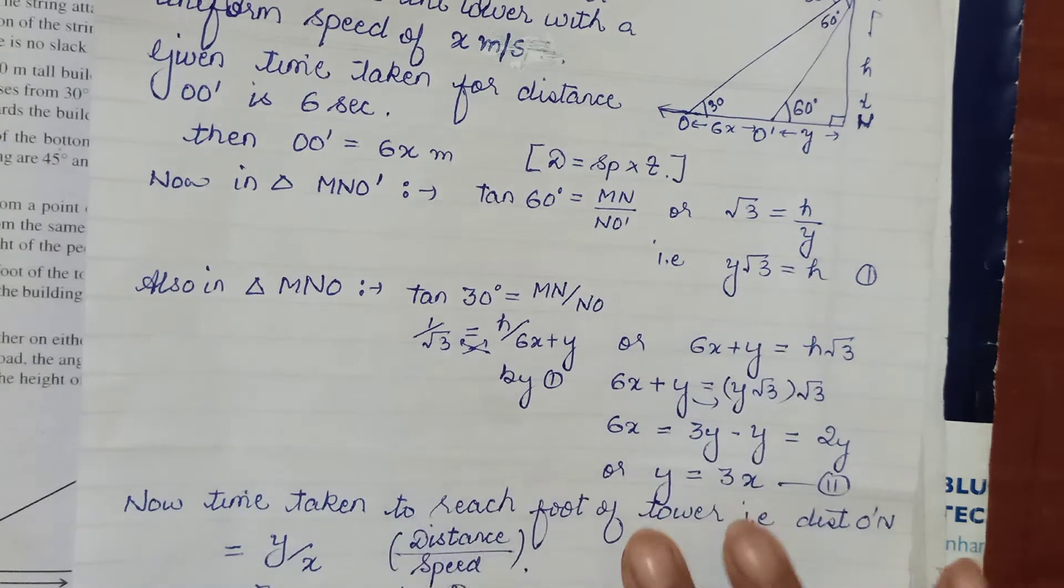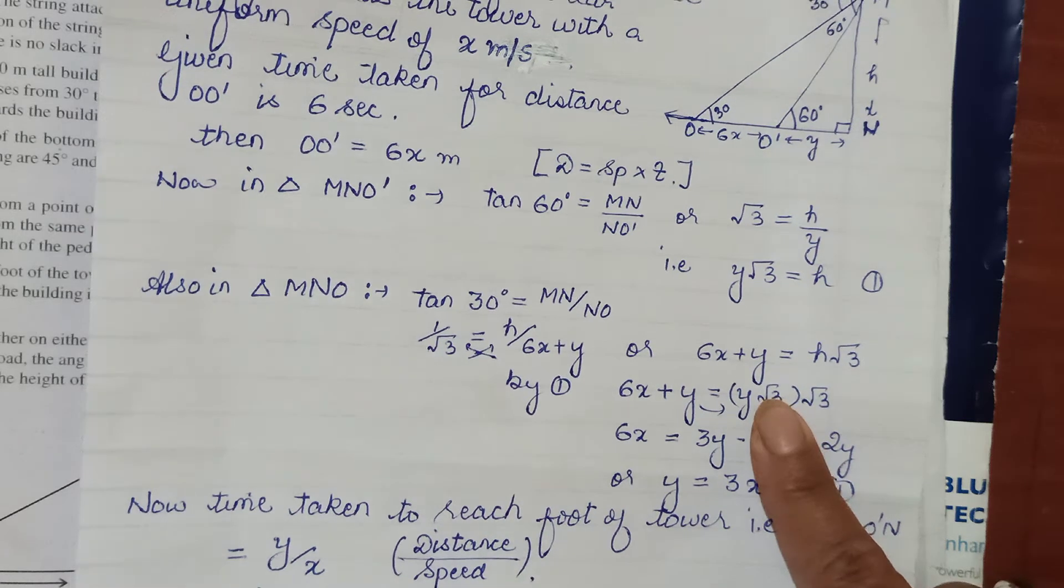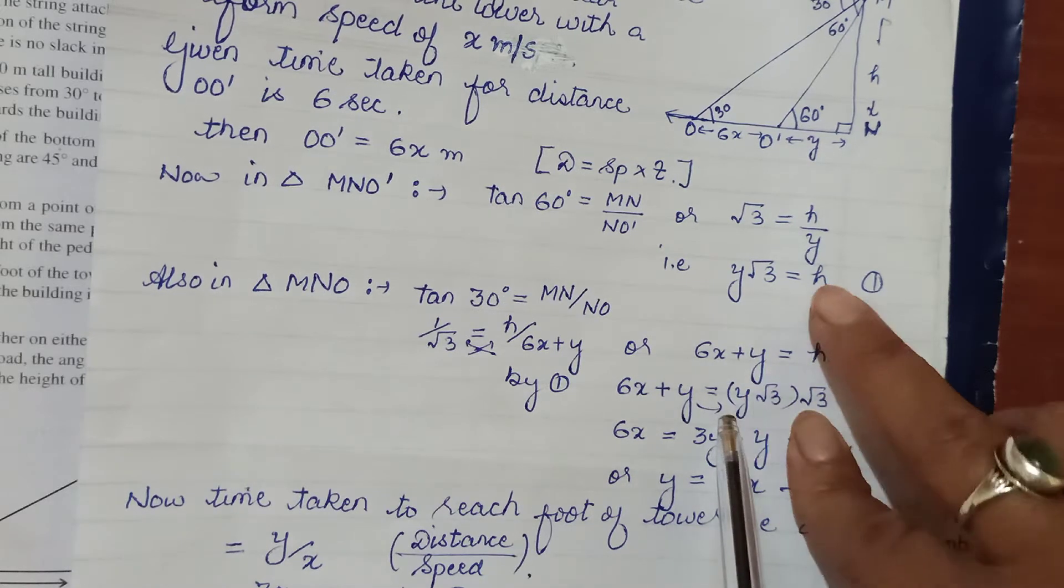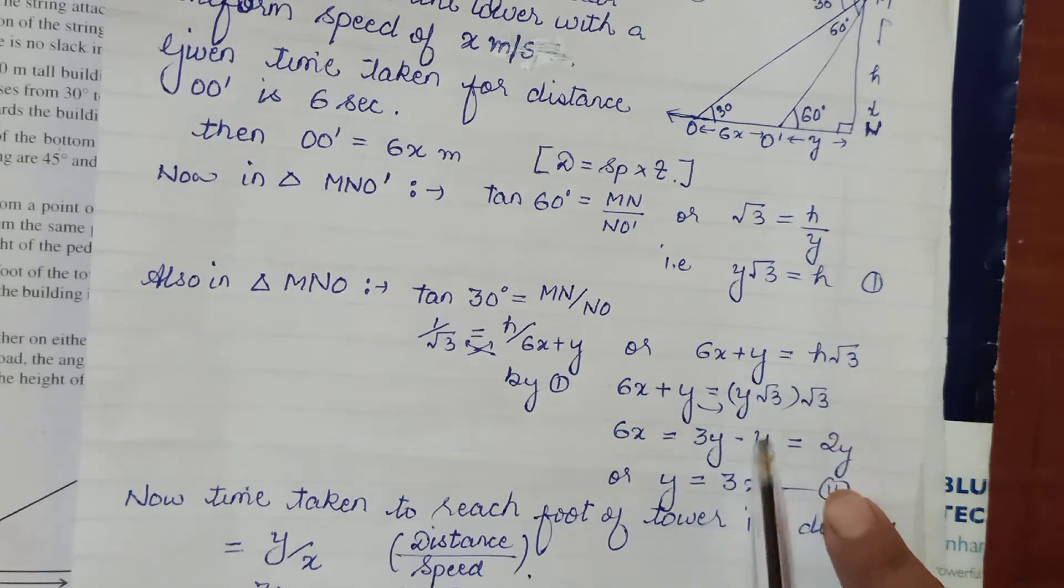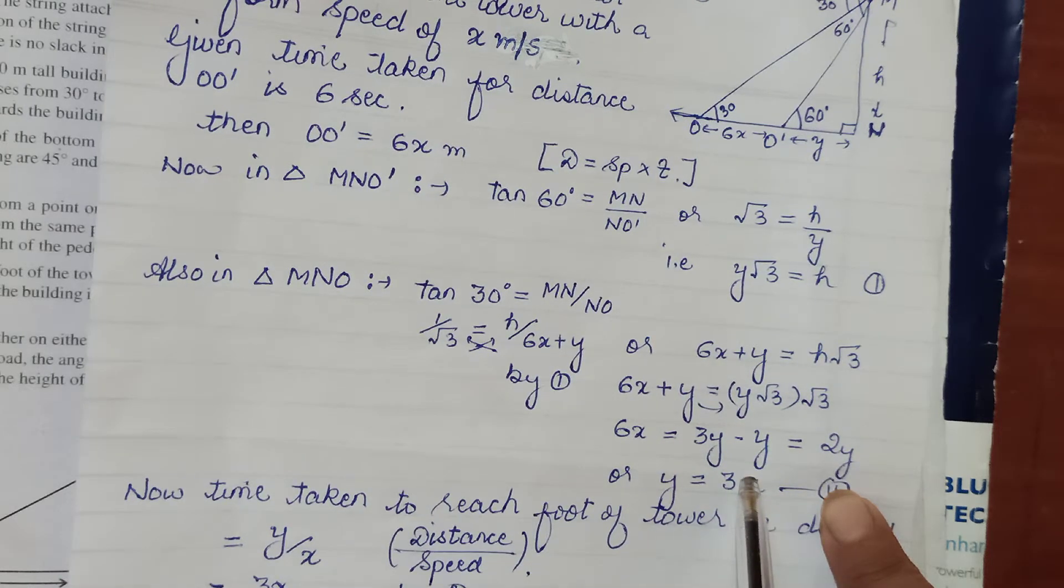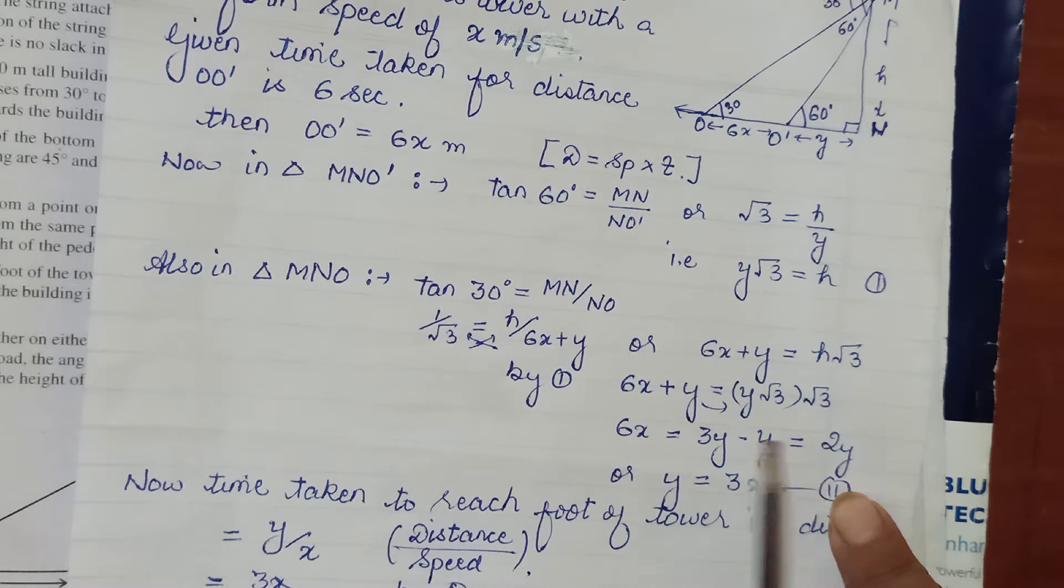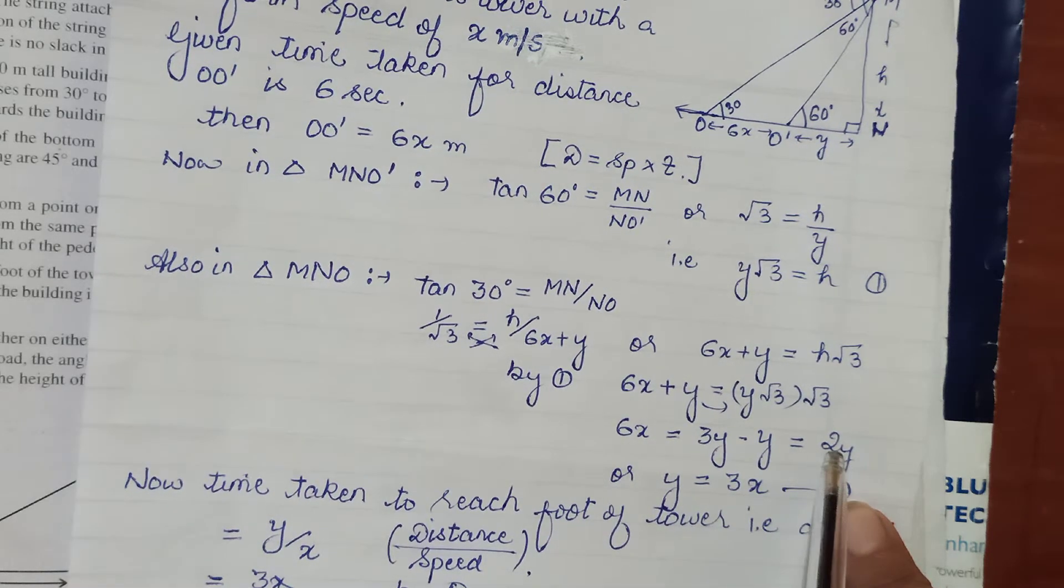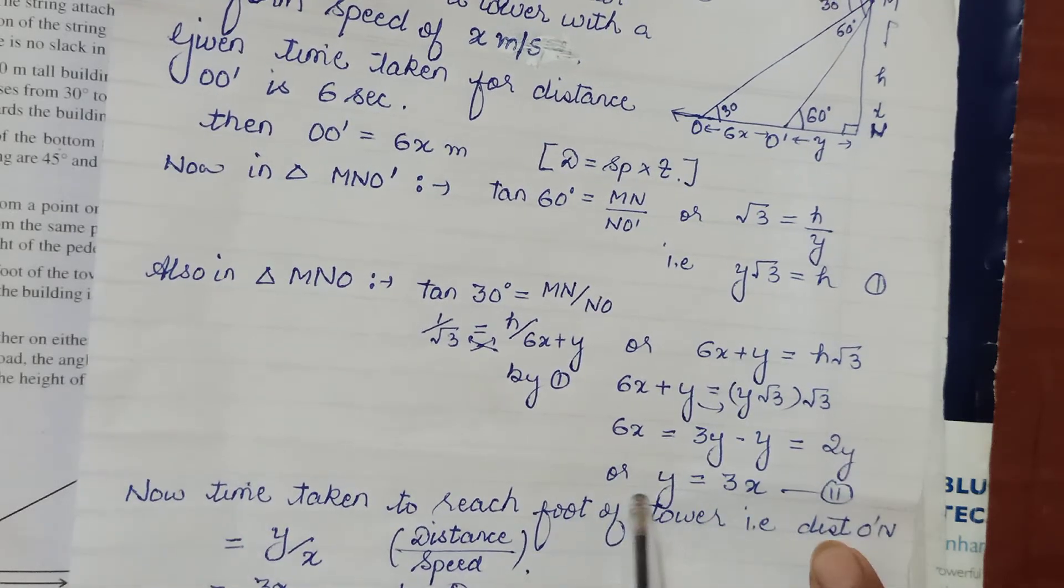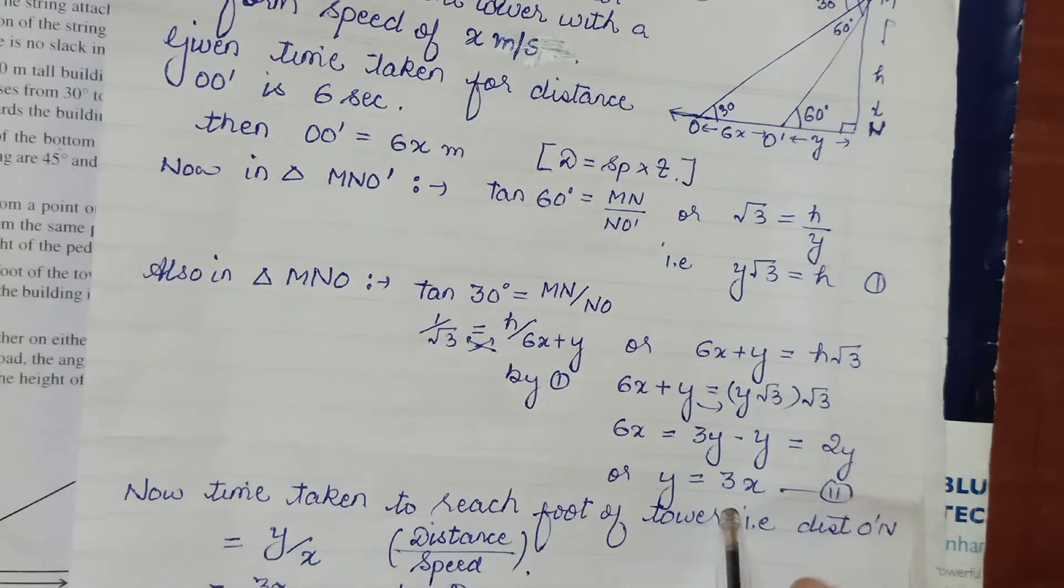Now H in the upper equation we have already calculated as Y root 3. That value you substitute here. So 6X plus Y is equal to H, in place of H we get Y root 3 into root 3. So that becomes 3Y. And this Y comes here as minus Y. 3Y minus Y becomes 2Y. So 6X is equal to 2Y. Hence from here, taking 2 to the other side, Y is equal to 6X upon 2, that is 3X. So this becomes your equation 2.